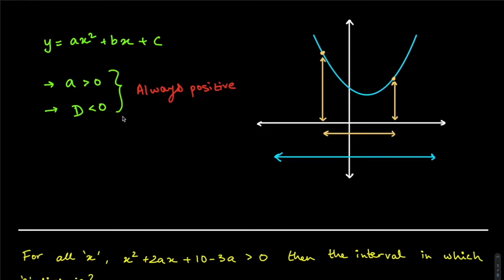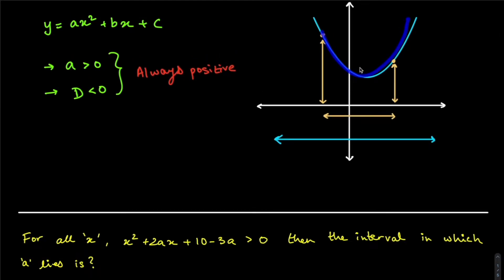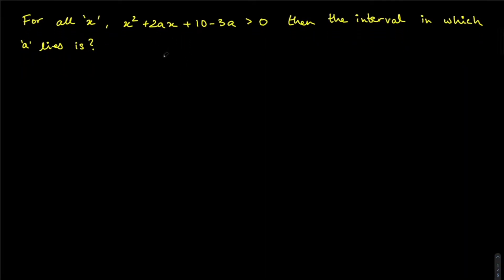We know two things right away: a is greater than zero — the coefficient of x squared is 1, so that's satisfied. The second property we need is that the determinant D should be less than zero. That means there are no real roots and the parabola never touches the x-axis. So let's solve for the determinant and get our equation in terms of a.